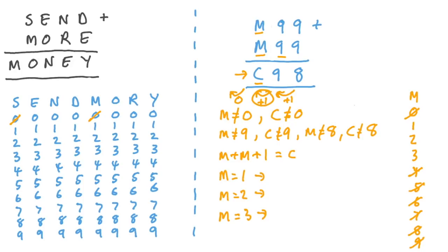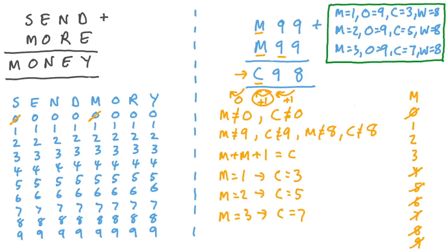Then if m is 1, 1 plus 1 plus 1 is equal to 3. If m is 2, 2 plus 2 plus 1 is equal to 5. And if m is 3, 3 plus 3 plus 1 is 7. So as we said, there are three different possible combinations of values that m, o, c and w could have.